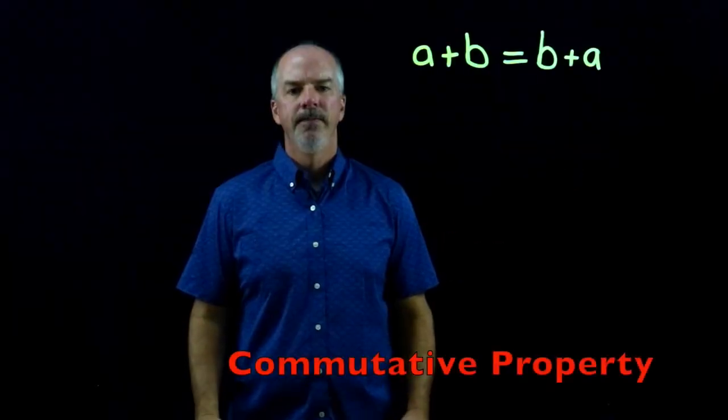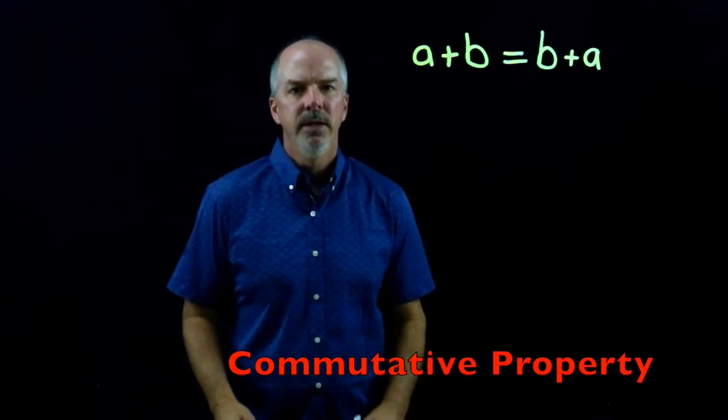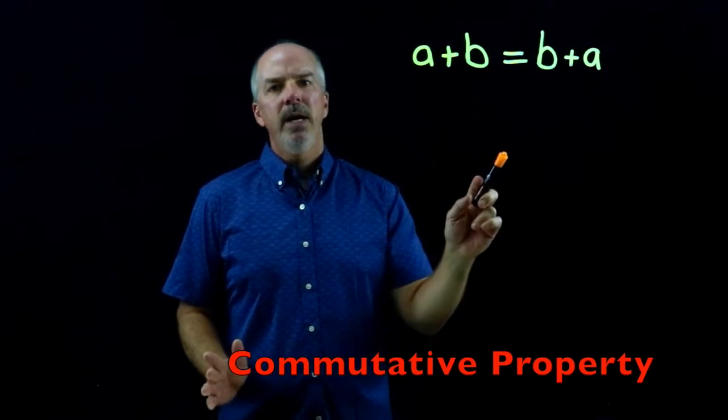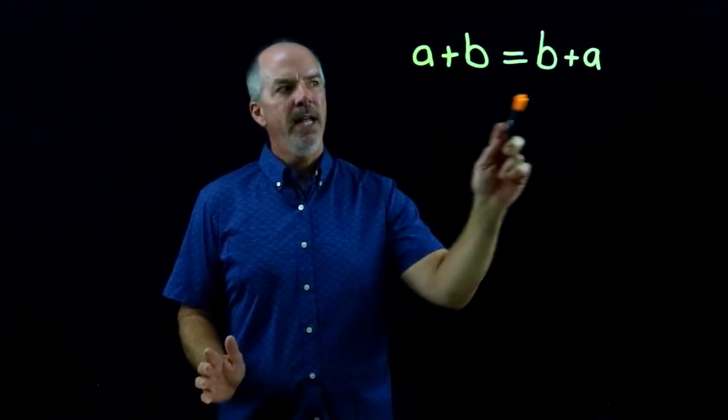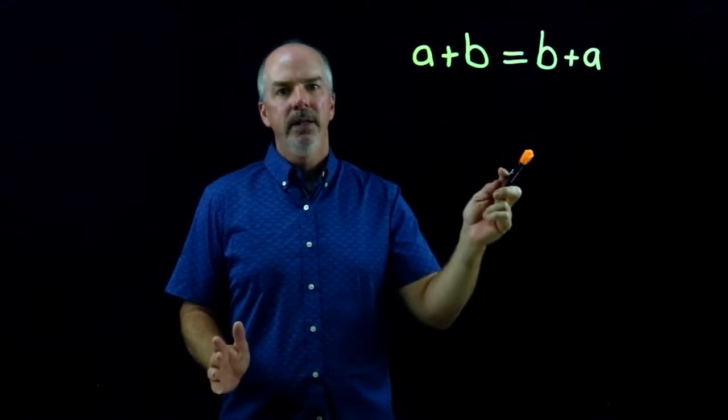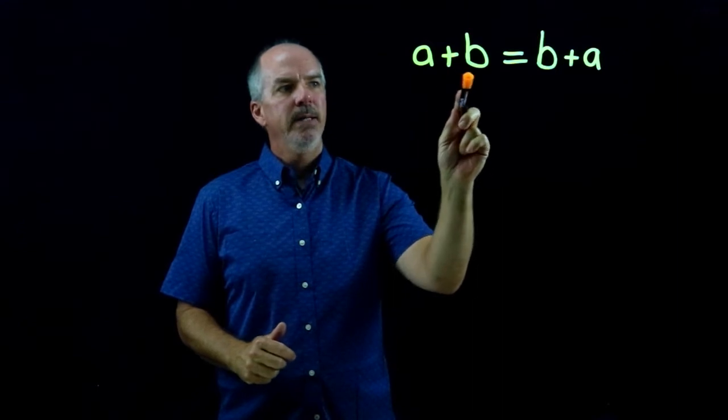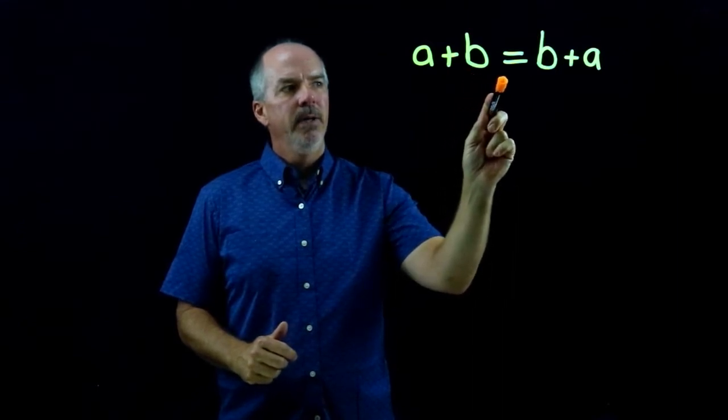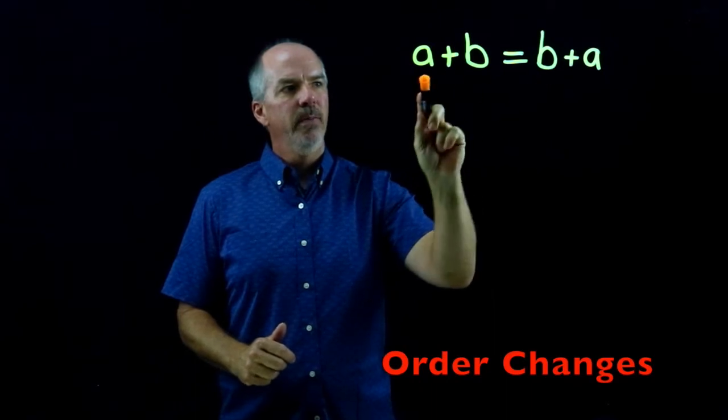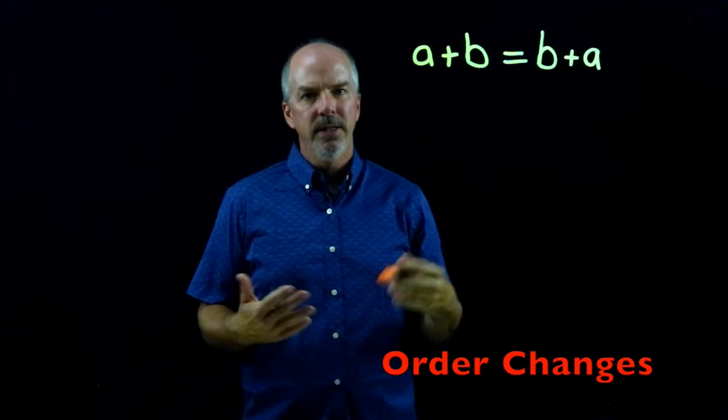The commutative property. One definition for the word commute is to change. So the commutative property of addition allows us to change the order in which we add without affecting the sum. In this case we have A plus B is equal to B plus A. So we change the order from A plus B to B plus A and we can do that without changing the sum.